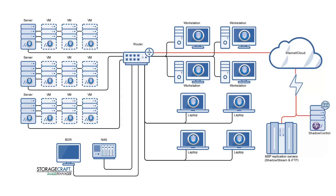ShadowStream is basically the reverse — it's optimized for connections with high latency and low bandwidth, because it takes a backup image, divides it into many smaller pieces, and uses multiple connections and streams to replicate it to the target destination. There are also a few cloud replication options provided by StorageCraft themselves; however, these are not yet available in our distribution territories. StorageCraft is currently deploying data centers across Europe, and only once local data center options are available will that become a feasible option.